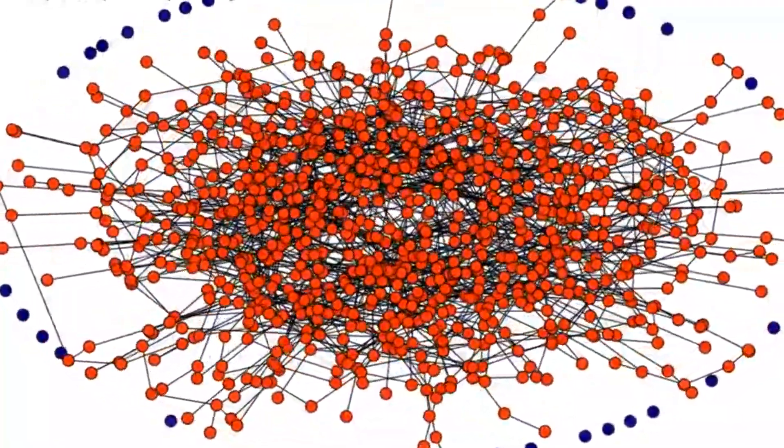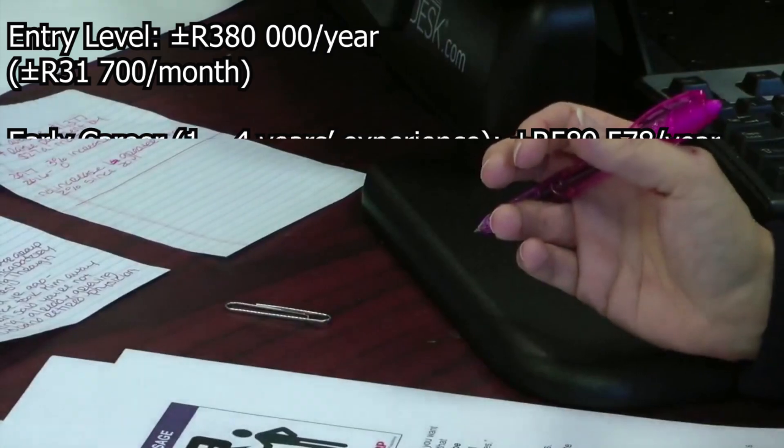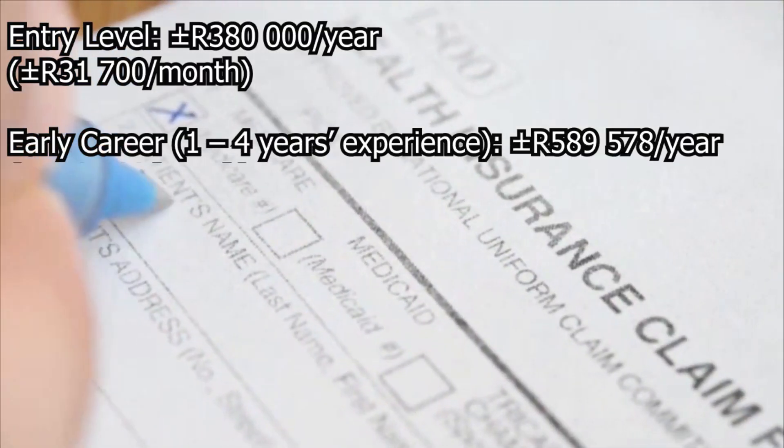The salaries are as follows. Entry level is R380,000 per year, which is about R31,700 per month.